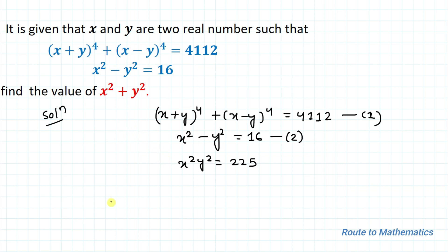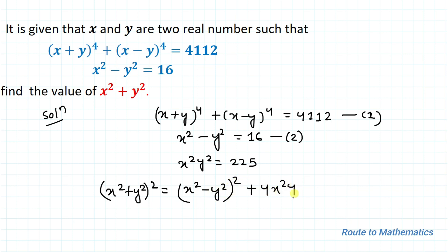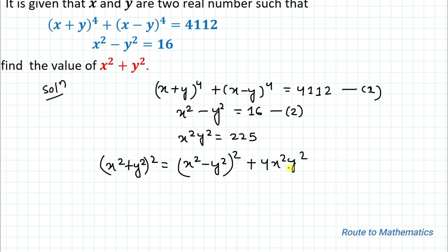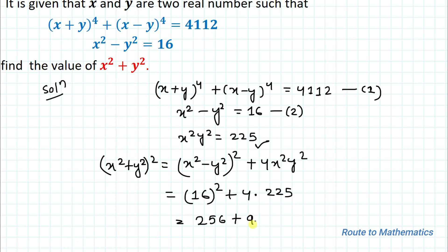We are asked to find x²+y². We use the identity: (x²+y²)² = (x²−y²)² + 4x²y². Substituting x²−y² = 16 and x²y² = 225, we get 16² + 4×225 = 256 + 900 = 1156.